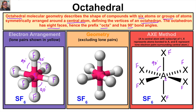So that is valence shell electron pair repulsion theory in a nutshell. These are some of the more common molecular geometries; however, there are many more that you will learn about in a later chemistry or organic chemistry course. If you like what you see, go ahead and click that subscribe button, and feel free to leave any comments or questions below. I really hope you guys found this helpful.